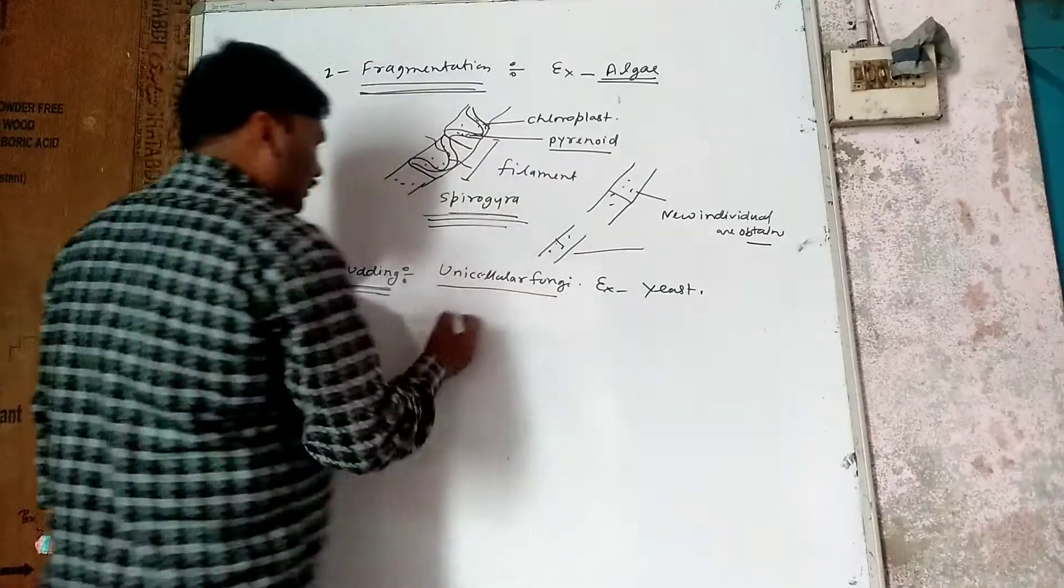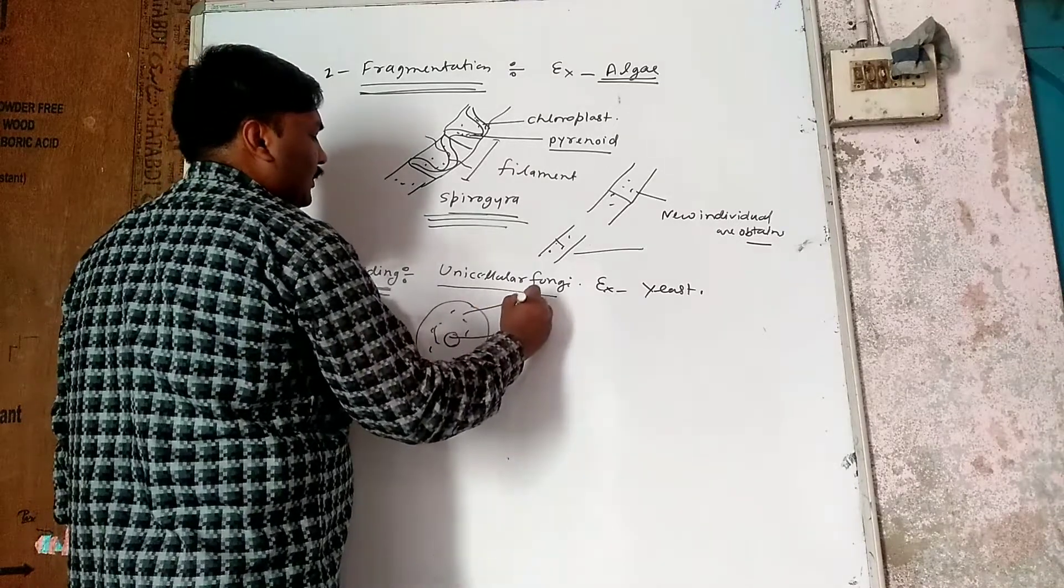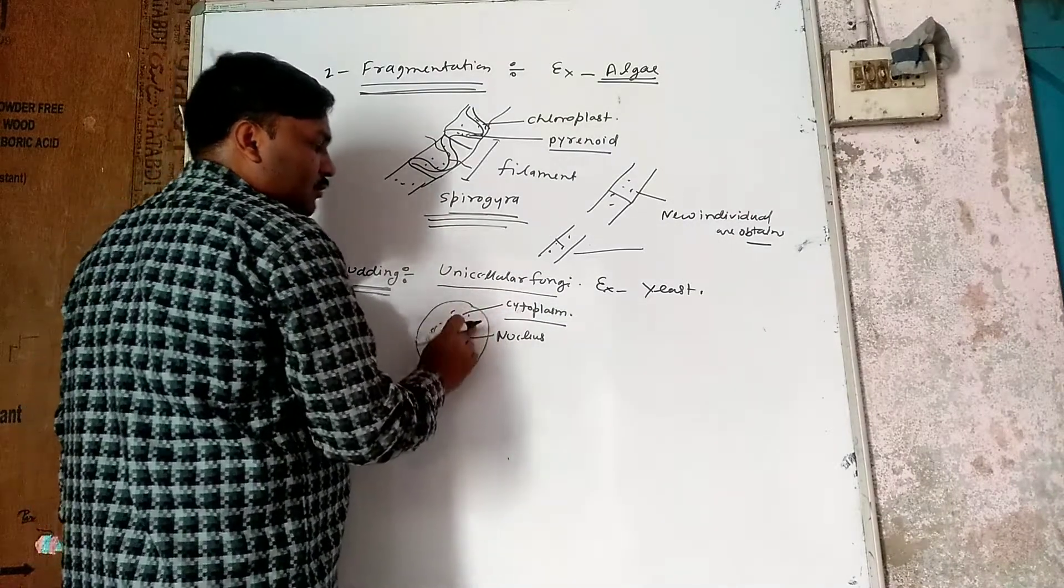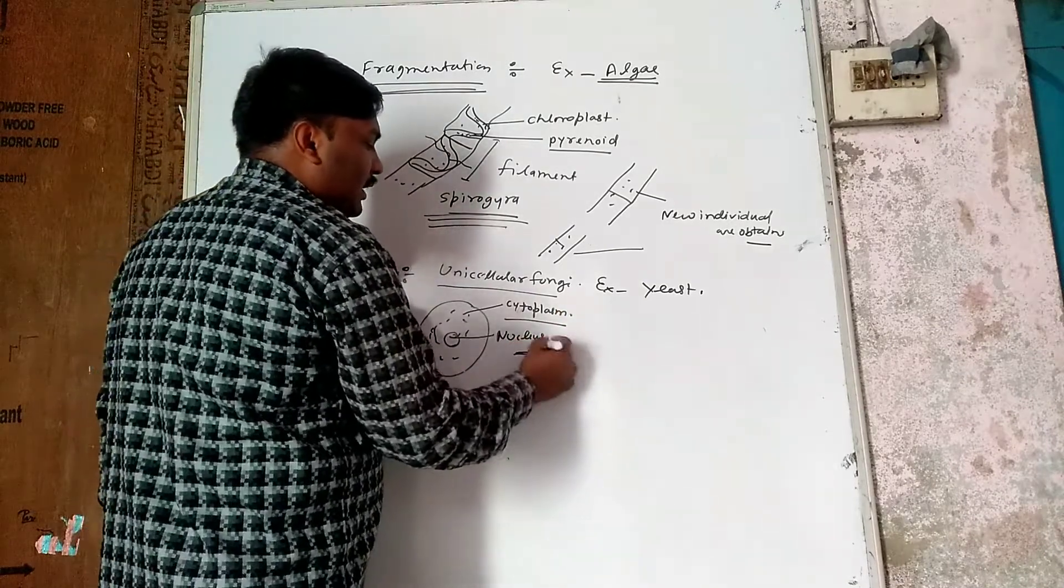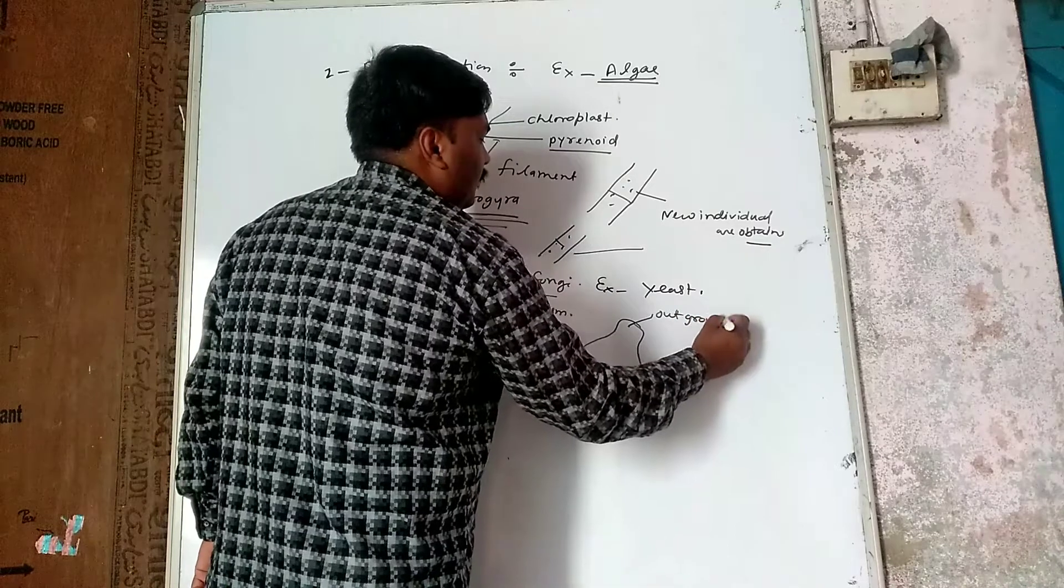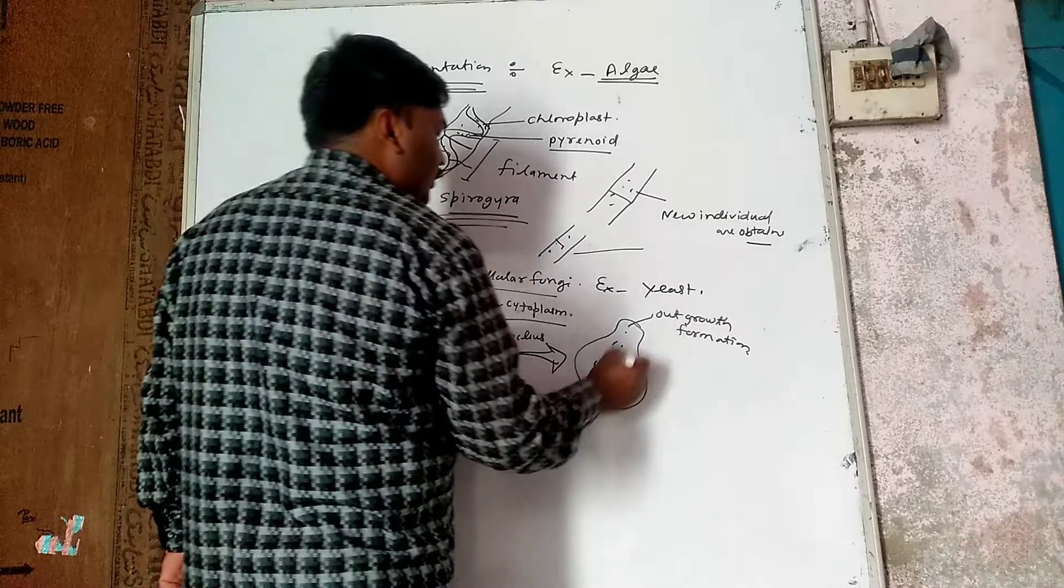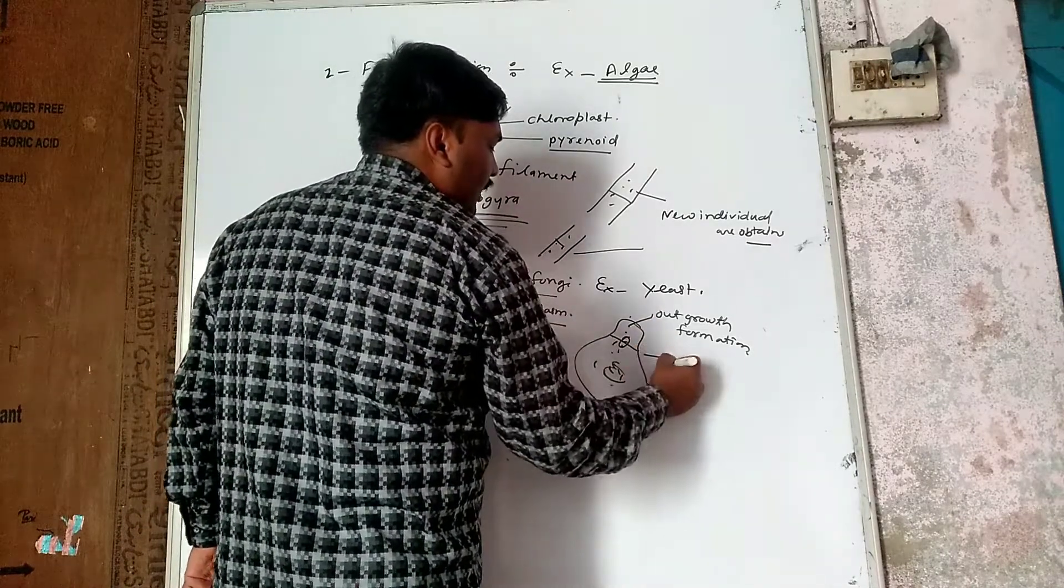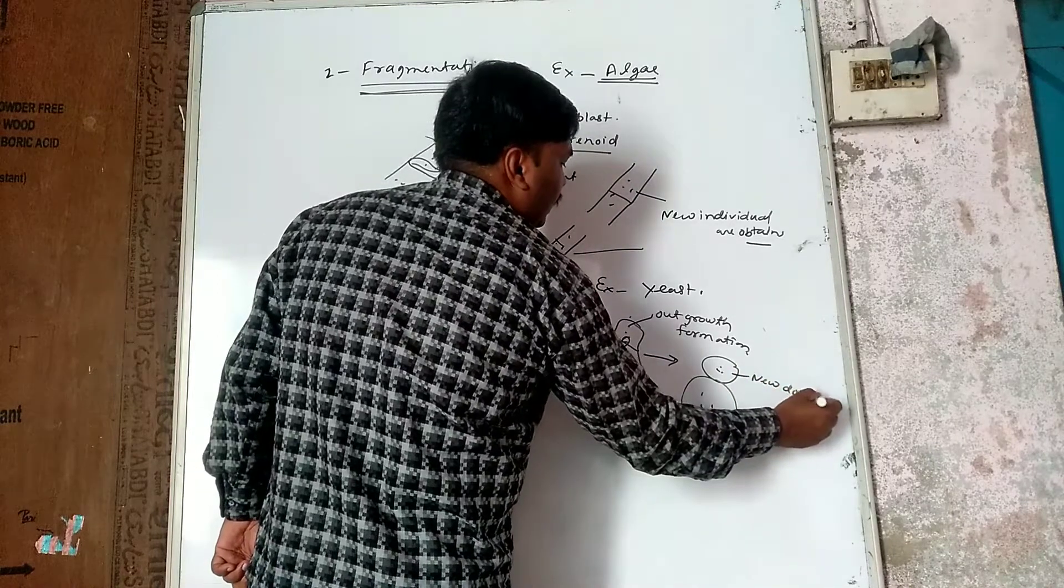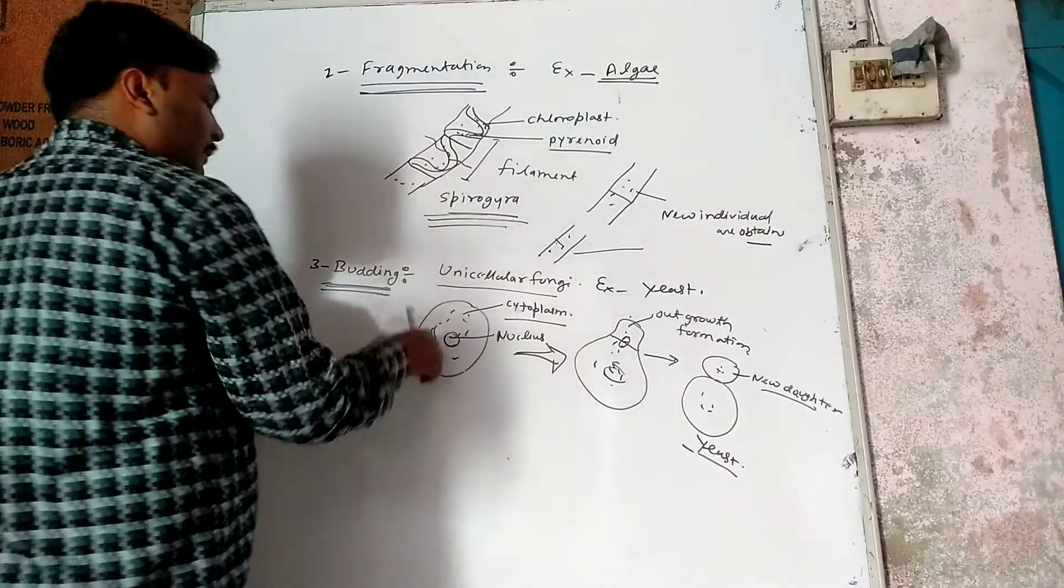It has a nucleus and cytoplasm. What happens in the nucleus and cytoplasm is division occurs in both. What happens in the outward direction is an outgrowth forms. What is this outgrowth? We will replace it. That is separate. The new daughter cell is formed. This is how the process works.